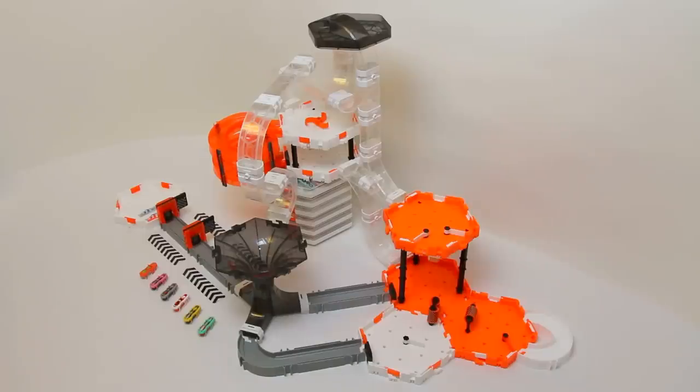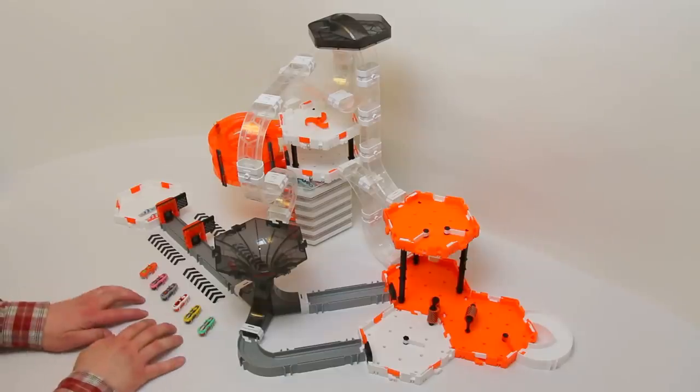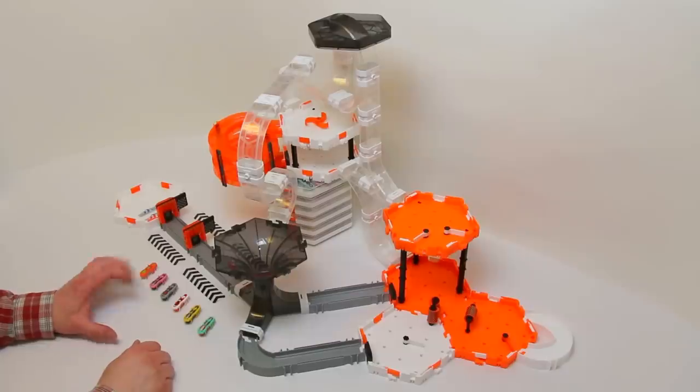Here we have a large Hexbug Nano V2 maze setup. I've got six Hexbug Nano V2 bugs that can climb vertically, and I've got a mixture of Nano V2 sets and some older Nano V1 sets.